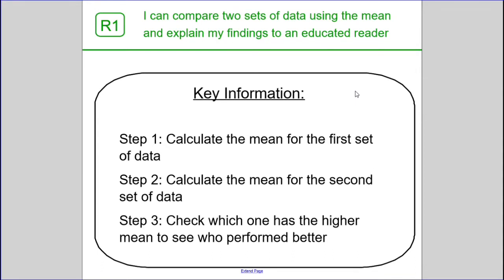So we've got key information here. Step 1, calculate the mean for the first set of data. Step 2, calculate the mean for the second set of data. Step 3, check which one has the higher mean to see who performed better. Pause the video here so you can take a note of this somewhere so that you can refer back to it whenever we're doing these type of questions.